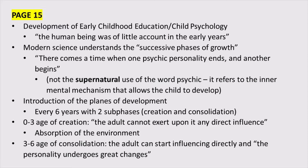I know some of you might question whether we're dealing with an adult when they're 18 years old — there's a lot of debate about that — but for right now we're going to focus on the first three planes of development. In the first plane, she talks about two sub-phases: the creation stage and the consolidation stage. The creation stage covers zero to three years old, and then there's the consolidation phase from three to six, during which they consolidate all that they've created in the first three years.